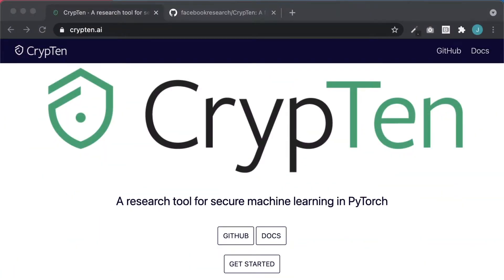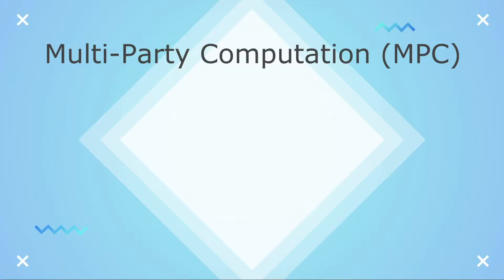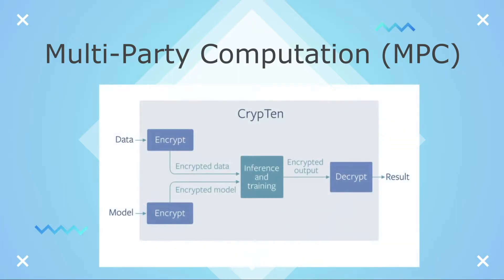Krypton is a framework built on PyTorch that allows machine learning researchers to train their models using encrypted data while keeping that data secure. It does this by taking advantage of multi-party computation, or MPC. This cryptographic method essentially splits the original data into multiple parts.